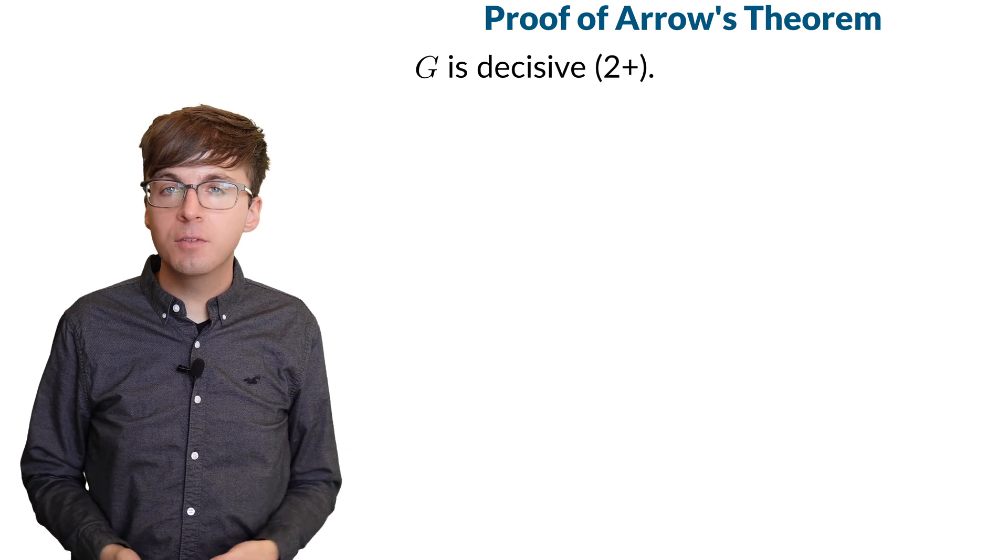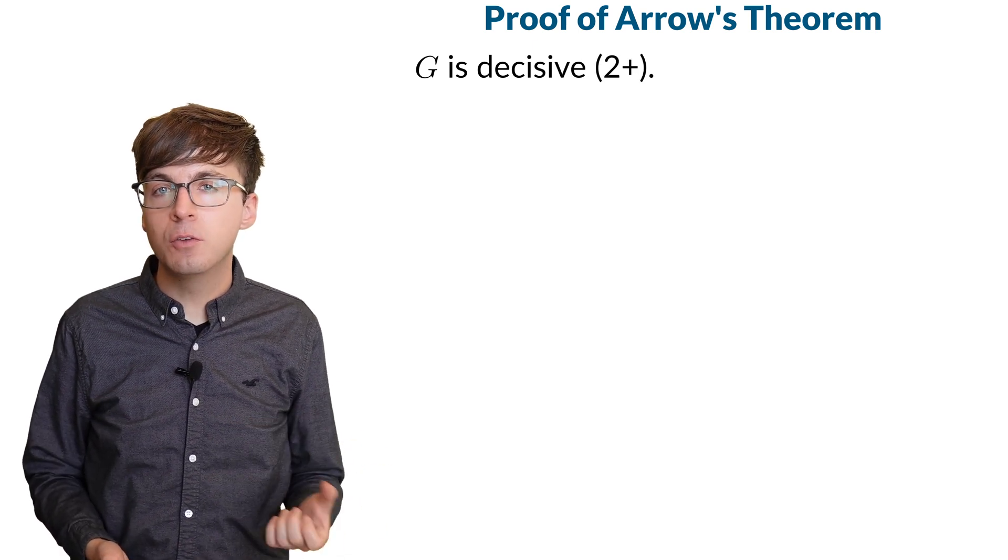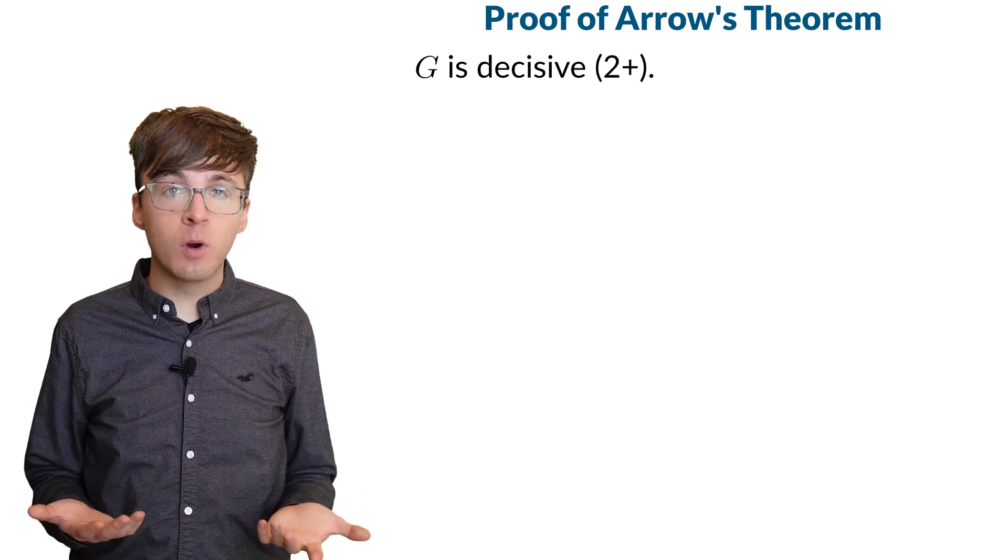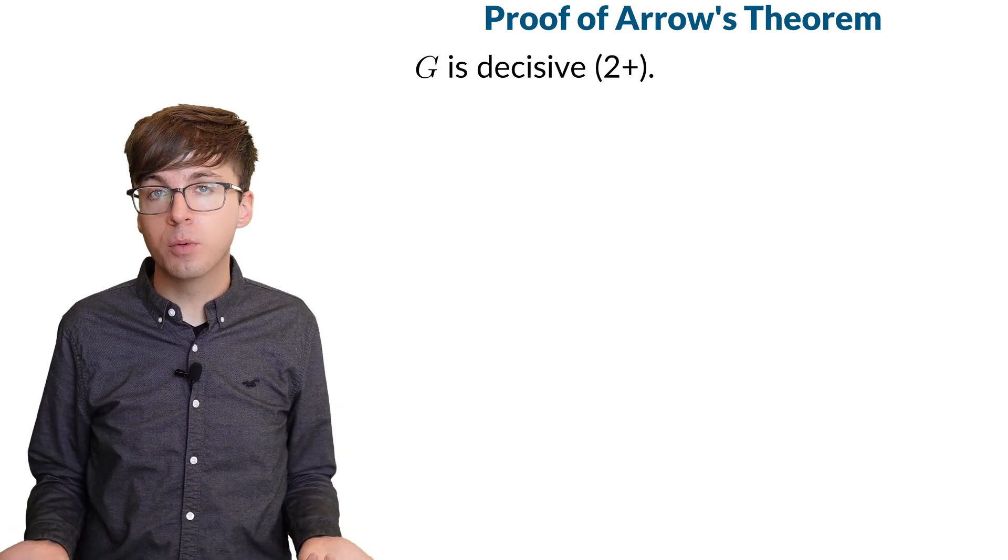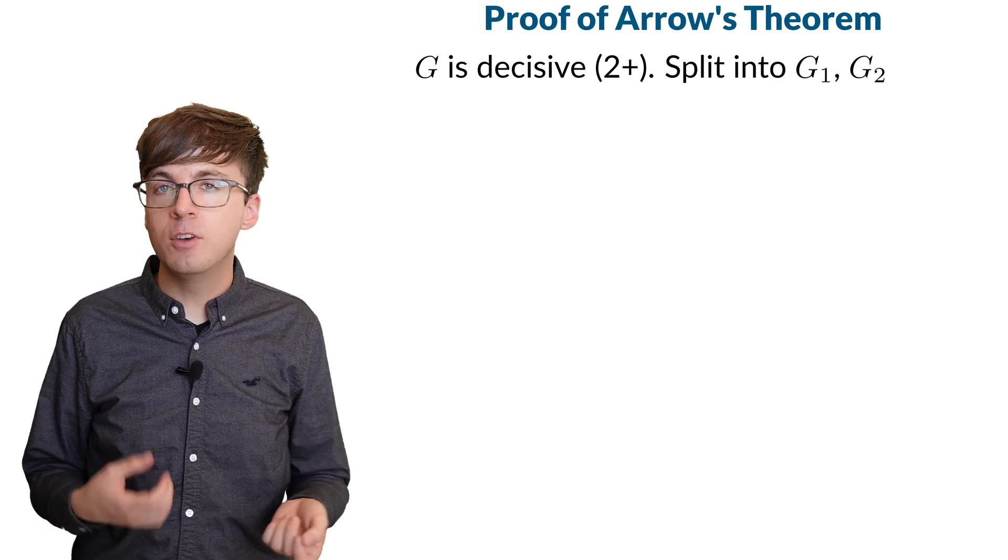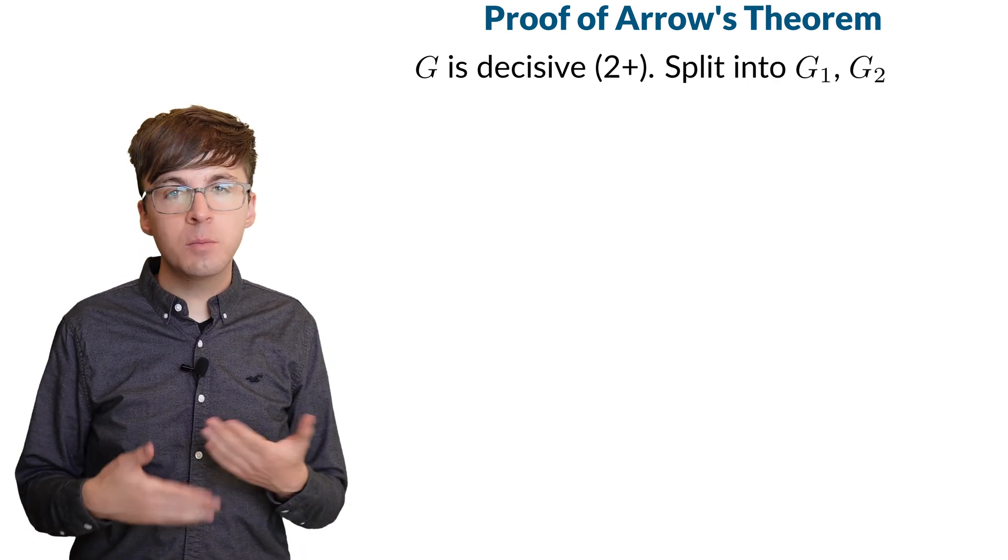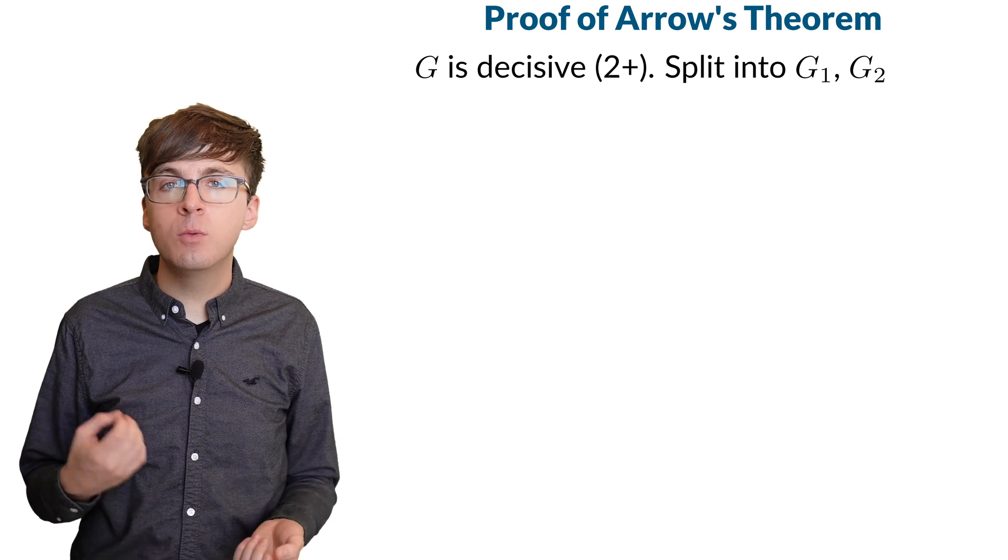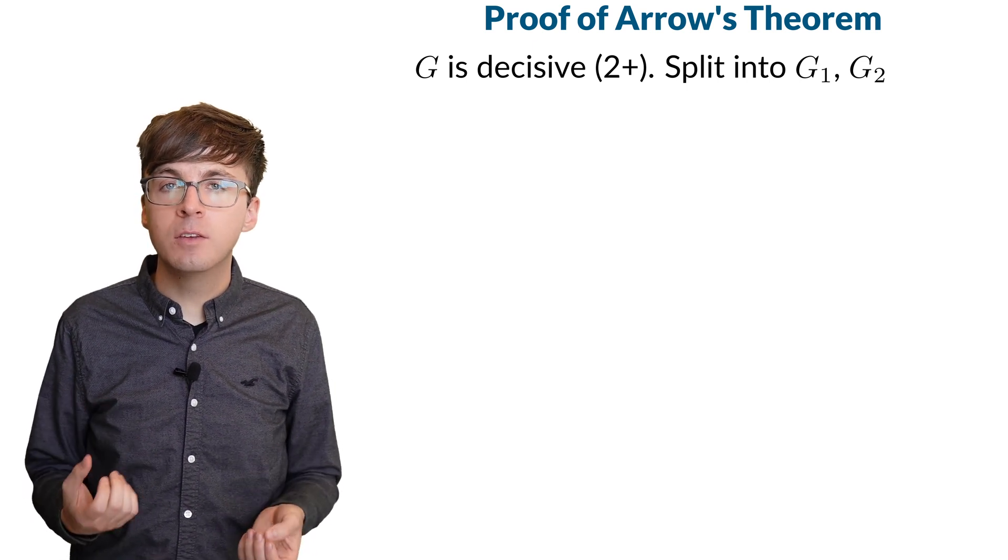Let's start with the decisive coalition G of at least two people. We know there's at least one, which is the entire group. Now let's split the coalition into two non-empty subsets, G1 and G2. It doesn't matter how we split it as long as G1 and G2 both have at least one person.